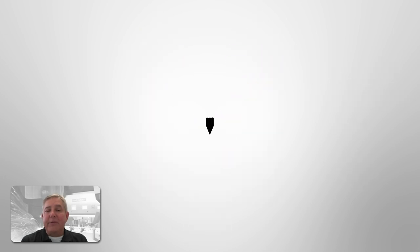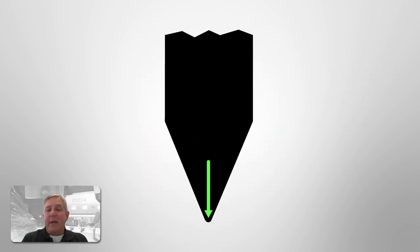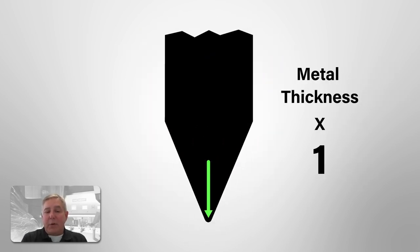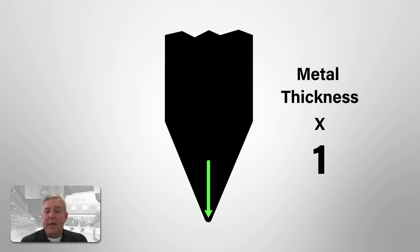The other thing to consider is the upper tool. On the upper tool, we're concerned about the radius — the punch radius. For mild steel and stainless steel, the rule of thumb is a one times metal thickness upper punch radius. Aluminums and high strength steels will be slightly different.